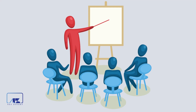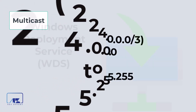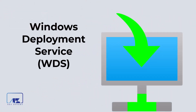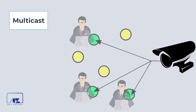Multicast has a specific IP range. It is from Class D, in the range of 224.0.0.0 to 239.255.255.255. Some use cases for multicast include Windows Deployment Service (WDS) or CCTV cameras on your network. A camera using unicast would send separate streams to each user, but with multicast it sends the data once and all users with the multicast IP address can receive and watch the feed. This saves a lot of bandwidth. You can create a multicast scope on a DHCP server to let DHCP control the allocation of multicast IP addresses.